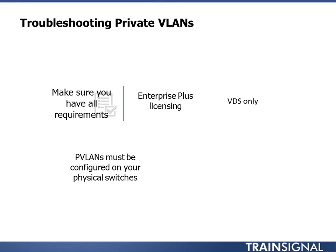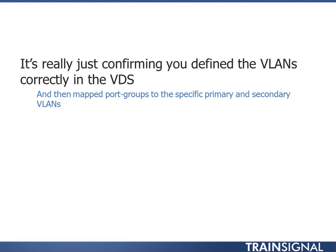PVLANs must be configured on your physical switches — though the Nexus 1000V can do it without physical switch support, the VMware distributed switch requires physical switch support. You must be trunking all needed VLANs to and from the host — that includes your primary VLAN, your promiscuous, along with your community and isolated VLANs. It's really just confirming that you define the VLANs correctly in the distributed switch and then map them correctly into the port group.